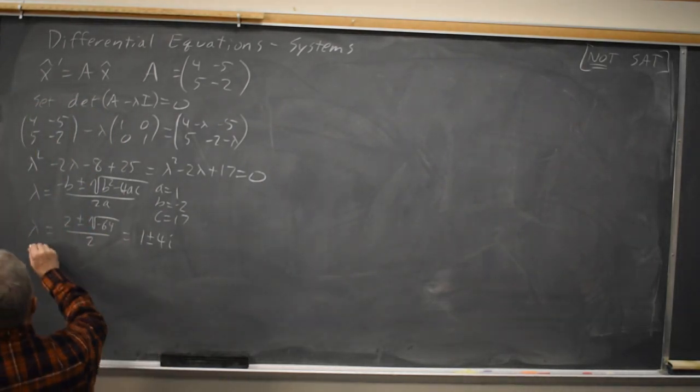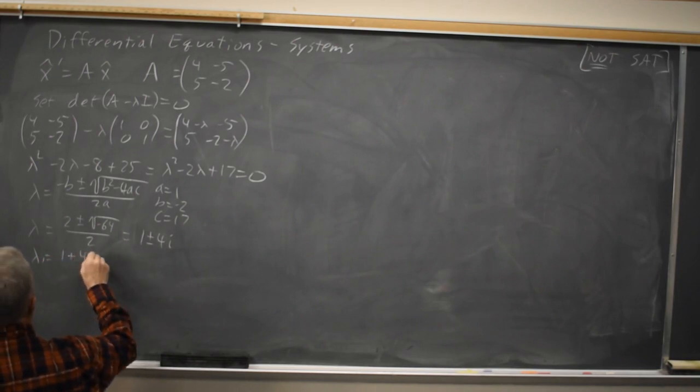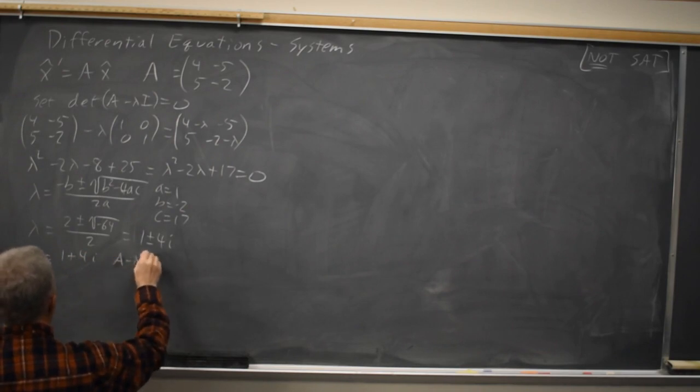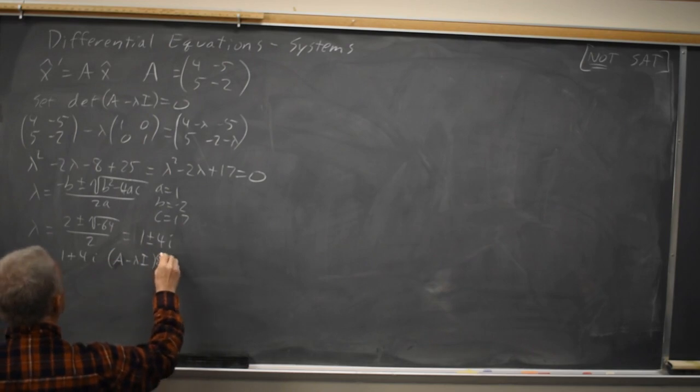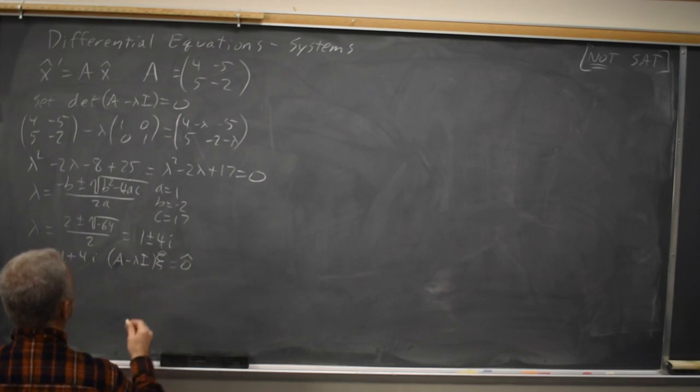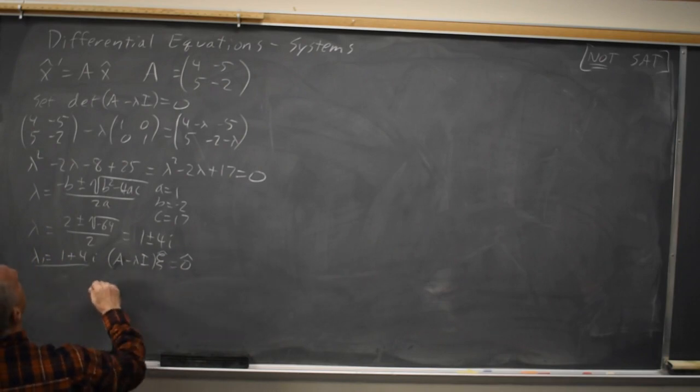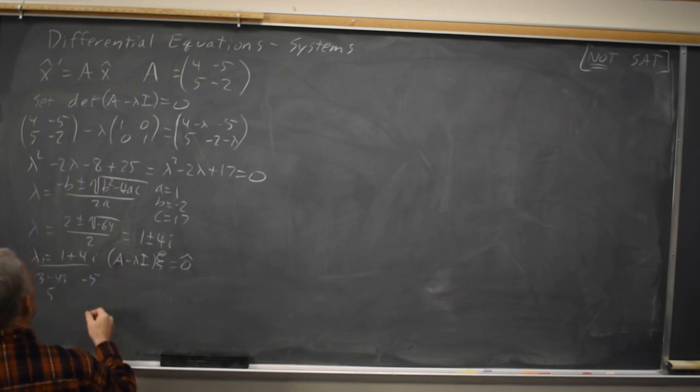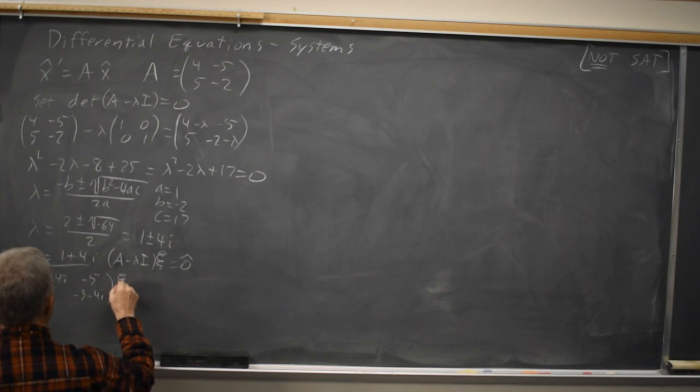Taking lambda equals 1 plus 4I, we can find our eigenvectors by solving A minus lambda I times eigenvector equals the zero vector. I'm sorry, we're finding eigenvectors, not eigenvalues. This is the eigenvalue. So that gives us 4 minus 1 is 3, and then minus 4i and negative 5. 5 and negative 2 minus 1 is negative 3, and minus 4i. Times xi1, xi2 equals the zero vector.